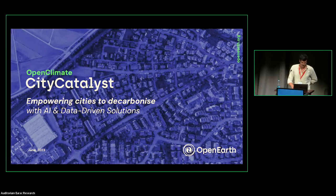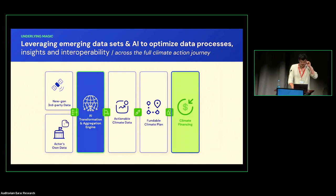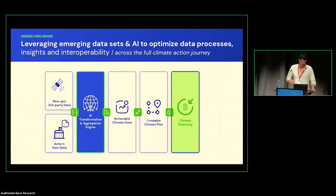That's where City Catalyst comes in — the tool we're building now, more focused on getting data in the hands of people implementing climate actions. We presented this at New York Climate Week with GCOM and C40. What we're doing is leveraging emerging data sets and AI tools to optimize this process. We think there's a lot of ready-to-use spatial data that can be pre-formatted for cities so they don't need to collect it. We're also building chatbots and data harmonization engines to help them use that data in effective, simple ways to get a GHG inventory prepared.